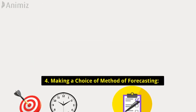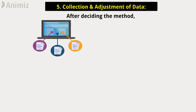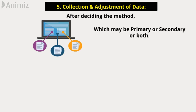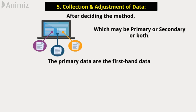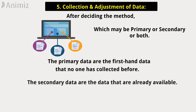Step 5: Collection and adjustment of data. After deciding the method, the next step is to collect the needed data, which may be primary or secondary or both. The primary data are the first-hand data that no one has collected before, while the secondary data are the data that are already available.